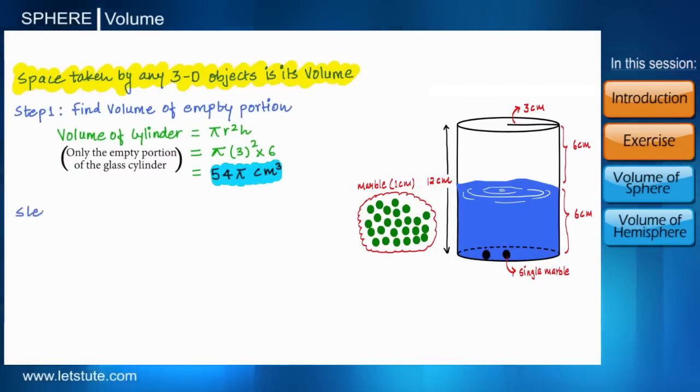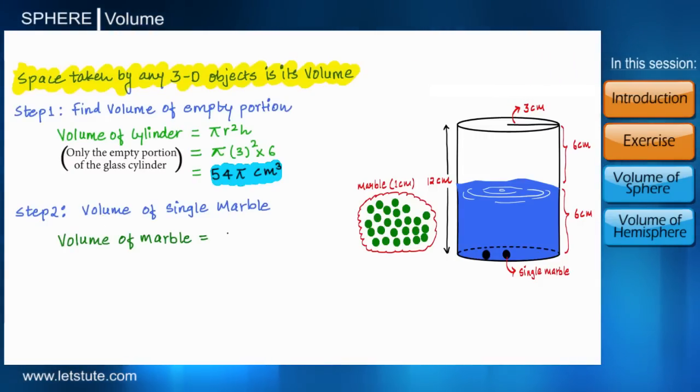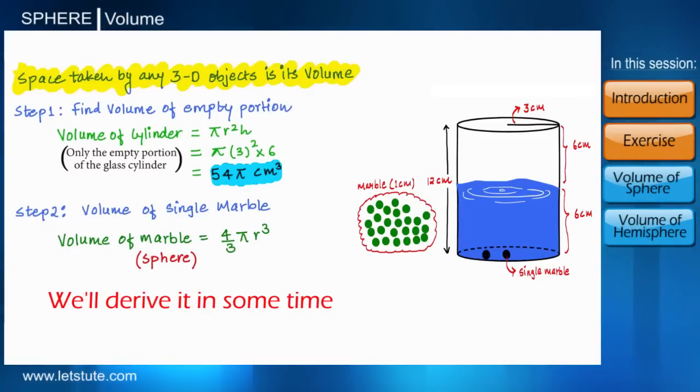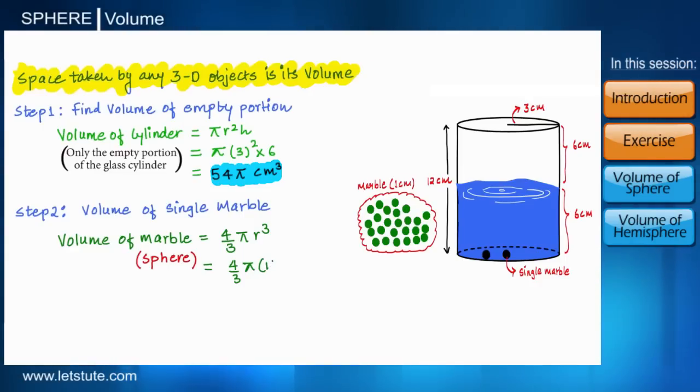Now the second step: volume of a marble. Volume of a marble is calculated by the formula 4/3 πr³. This is the general formula used to calculate the volume of a sphere, and marble is also a spherical object. We will also discuss why do we use this formula to calculate volume of a marble or you can say a spherical object, just after a few minutes.